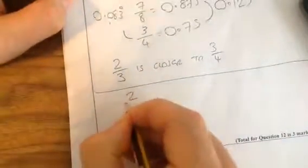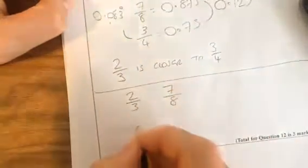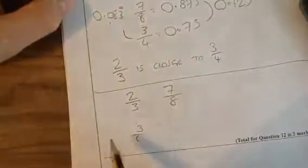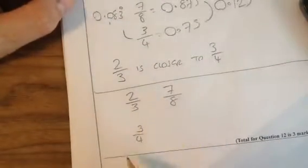Now, the other way we can do this, if you want to make them over the same denominators, so it's 2 thirds, 7 eighths is closer to 3 quarters. We'll need to find the lowest common multiple of 3, 8 and 4.